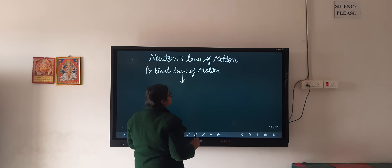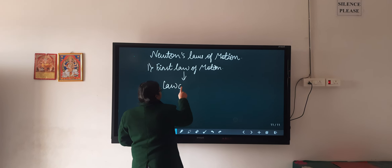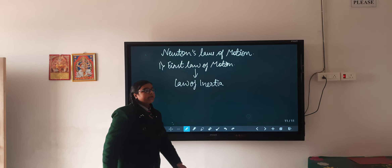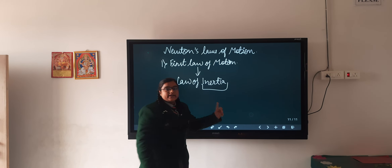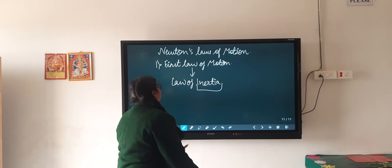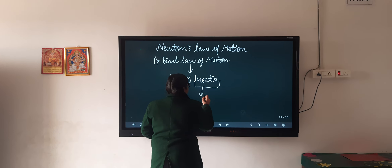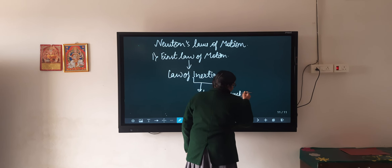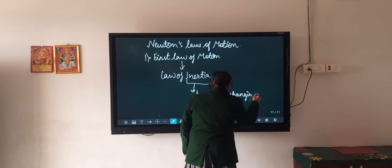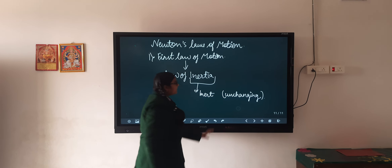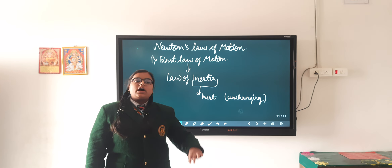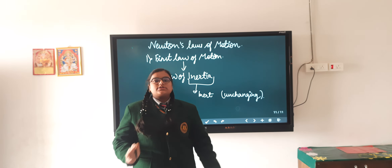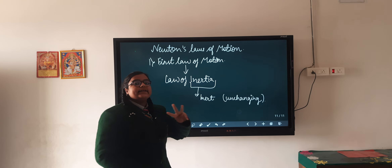As we know, this law is also known as the law of inertia. You may wonder what the word inertia means. This word inertia comes from a Latin word, which is 'inert', and this word inert means inactive or sluggish. So inertia is the tendency by which a body at rest will remain at rest, and a body in motion will remain in motion. There are three types of inertia.